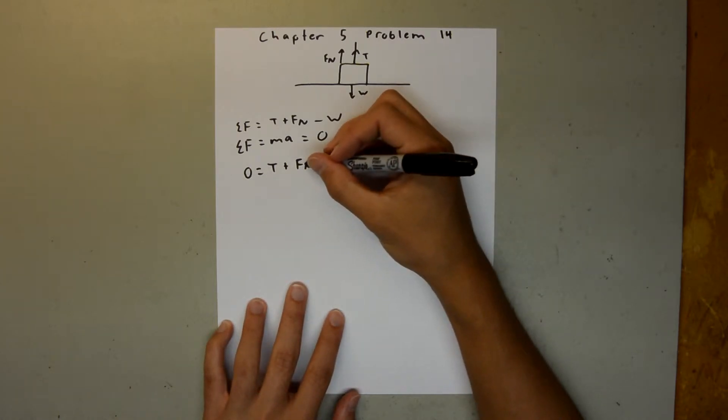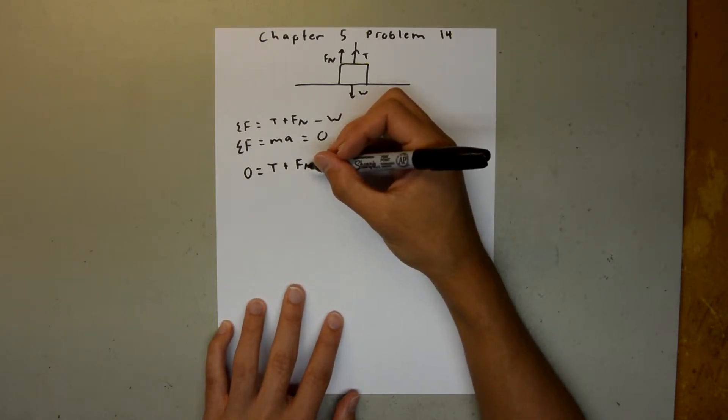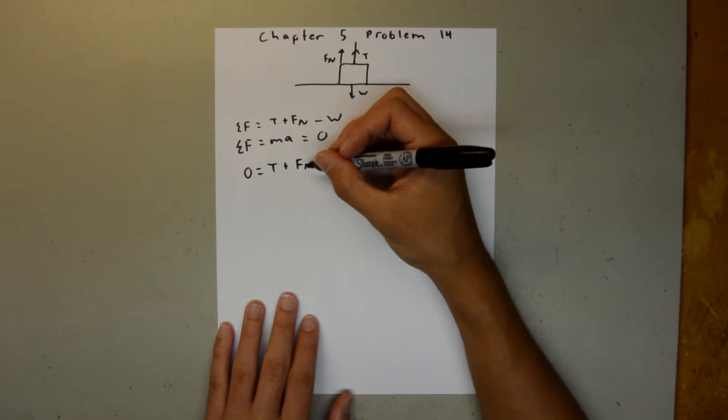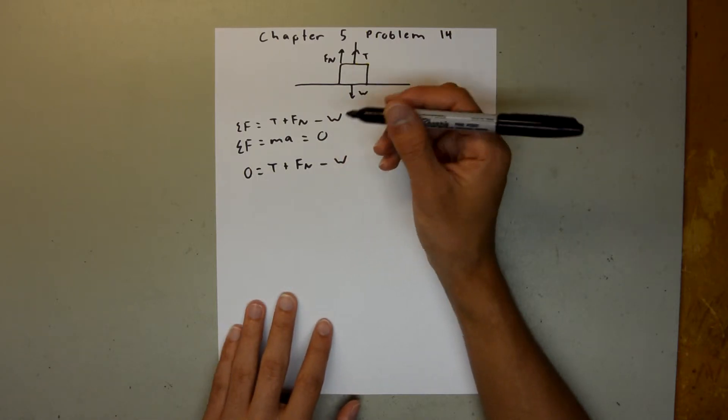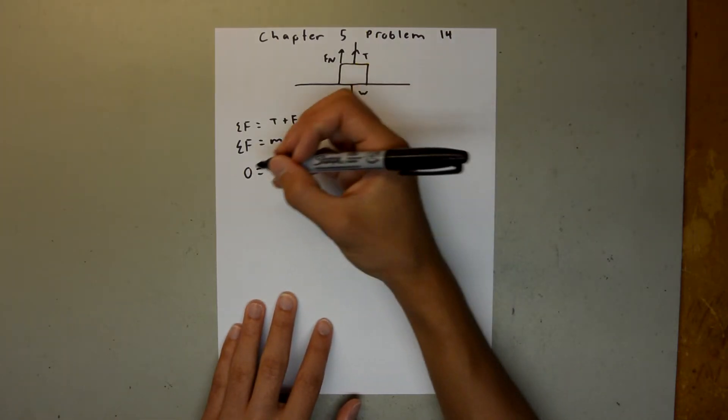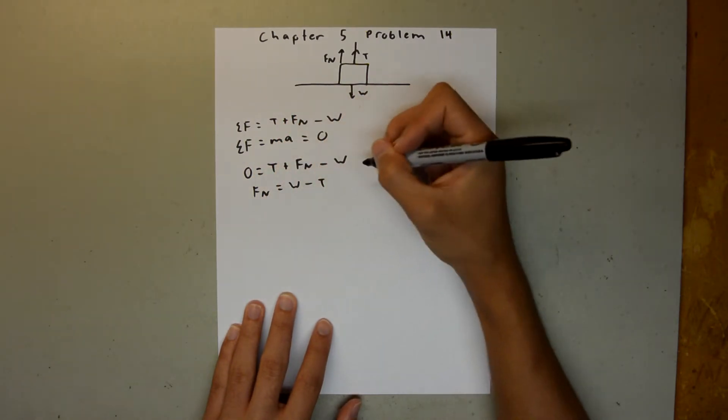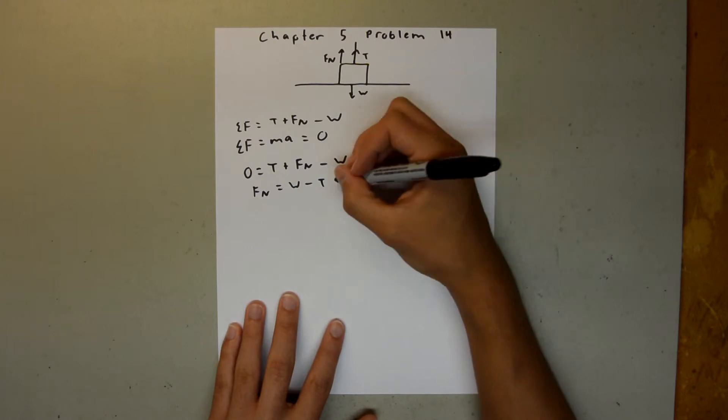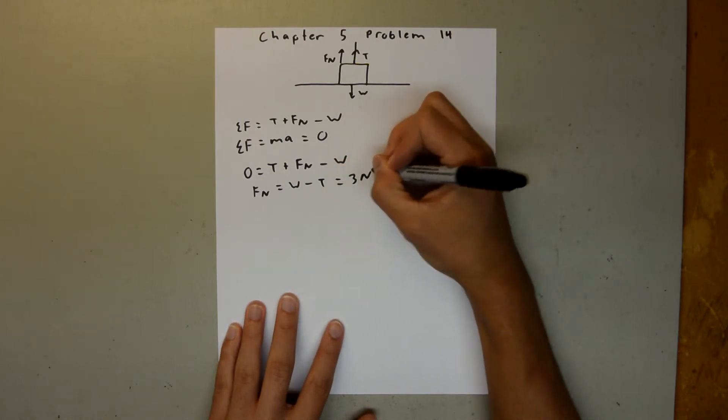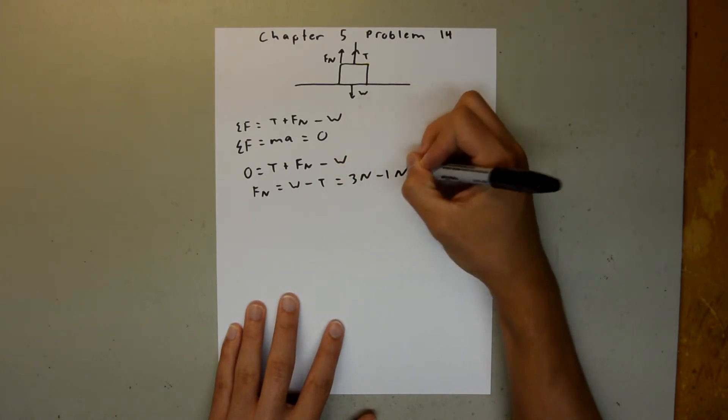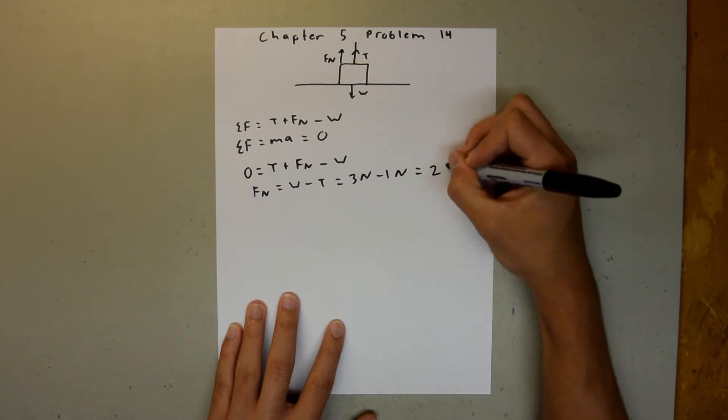We need to solve for the normal force since we are trying to find the magnitude of the force of the block on the table. We can rearrange this and say the normal force is equal to the weight force minus tension. We have both of those values, so this is going to be equal to three newtons minus one newton, which is equal to two newtons.